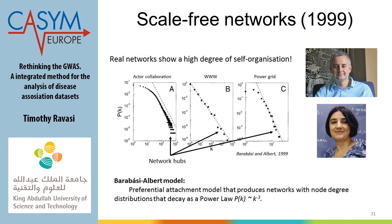Scale-free means the network doesn't grow proportionally when you add nodes — the number of interactions you add is not proportional to the number of nodes. Why? Because the probability of adding a hub is very low since there are very few hubs compared to the rest. In a random network, adding a node increases interactions proportionally; in a scale-free network, the probability of adding a hub is very low, so the growth is not proportional to network size.